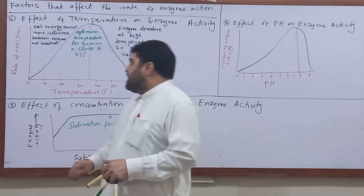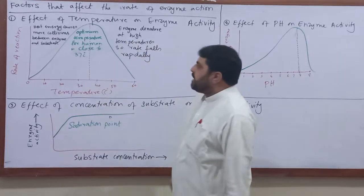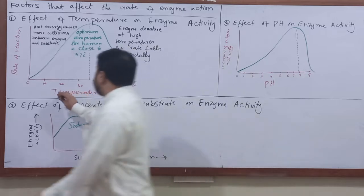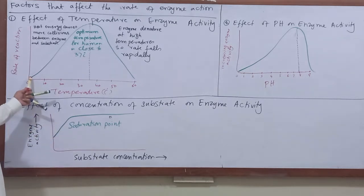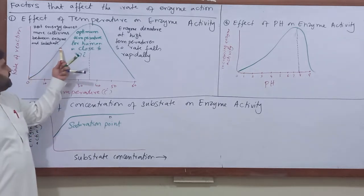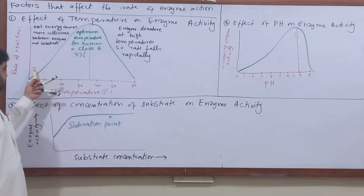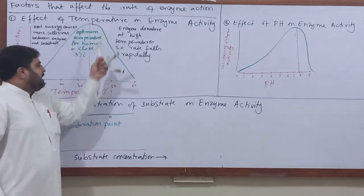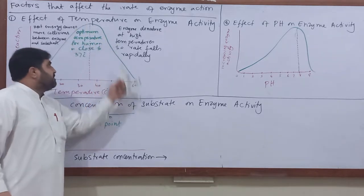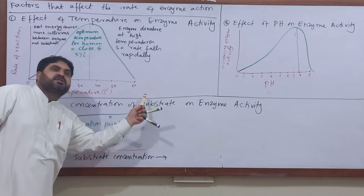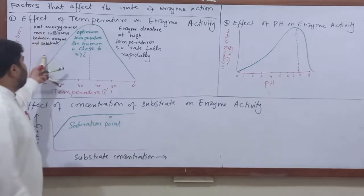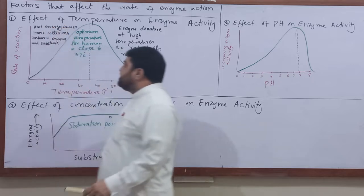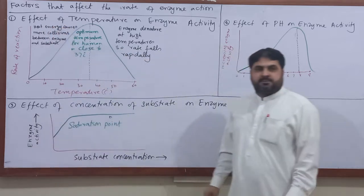As temperature increases, we can monitor the rate of reaction — it will increase. But if temperature rises too high, the rate of reaction will drop. The heat energy supplied affects the interaction between the enzyme and substrate.